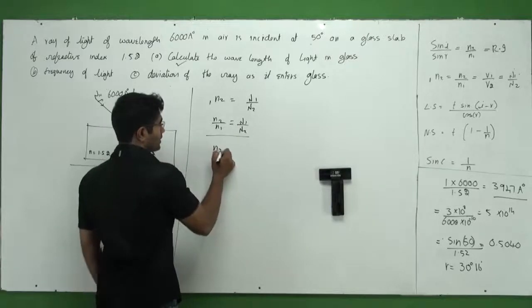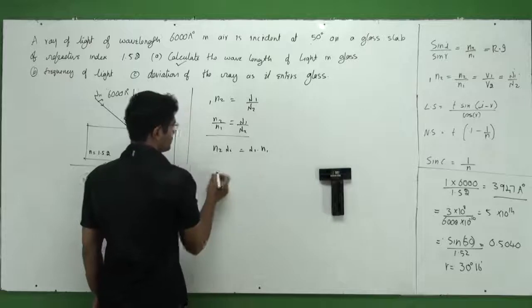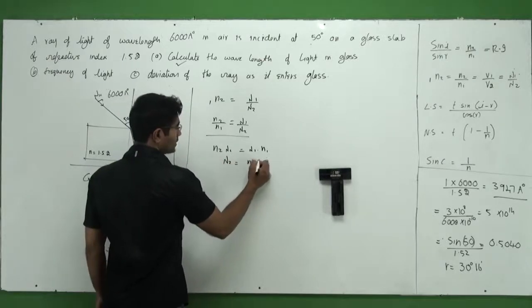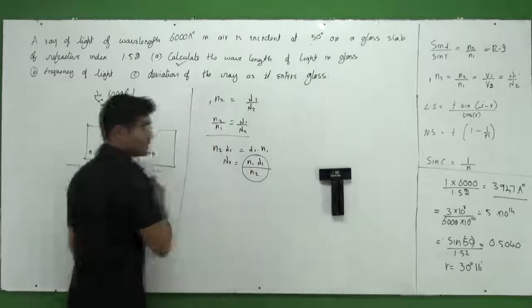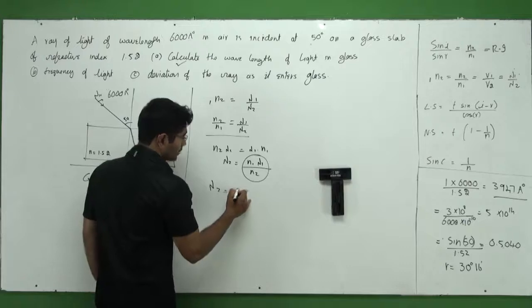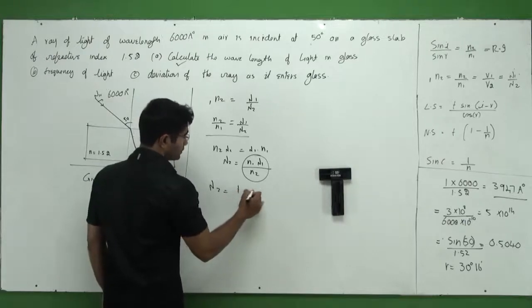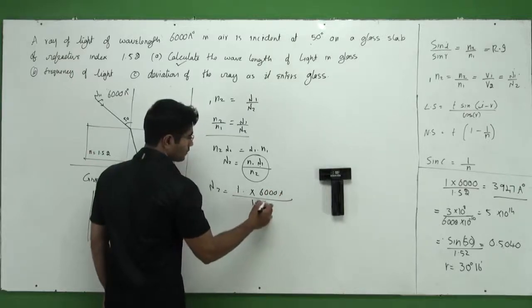Let's go. N2 lambda 2 is lambda 1 into N1. Substitute, and in fact I need lambda 2 is N1 into lambda 1 by N2. Do I know all these three values from the given data? Yes. So lambda 2 would be nothing but N1 is 1 into lambda 1 is 6000 Angstrom divided by N2 is 1.52.